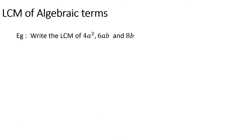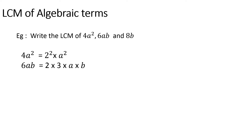Now let us see how to find the LCM of algebraic terms. Just like before, when algebraic terms are given we have to split the given terms into prime factors and algebraic terms. So 4a squared can be written as 2 squared into a squared, while 6ab can be written as 2 into 3 into a into b, whereas 8b can be written as 2 to the power 3 into b.